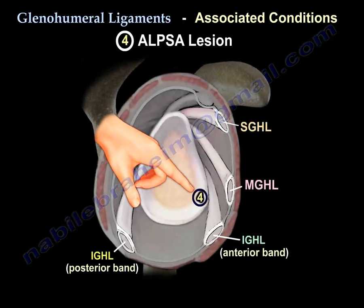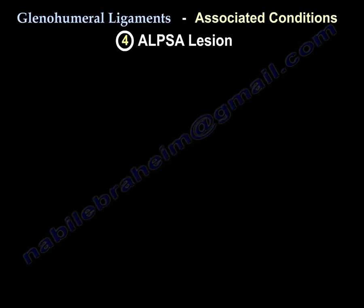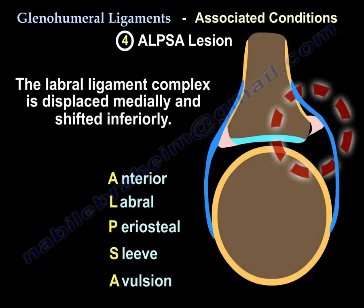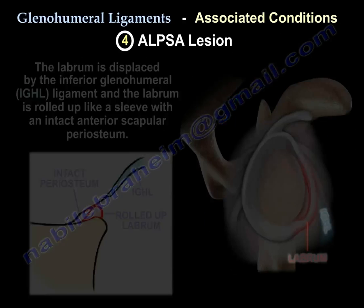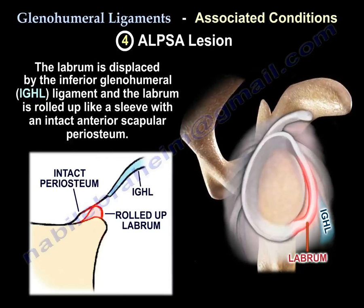Another lesion connected to the inferior glenohumeral ligament is the ALPSA lesion. The labrum is displaced medially and shifted inferiorly. It is displaced by the inferior glenohumeral ligament and rolled up like a sleeve with the intact anterior scapular periosteum.